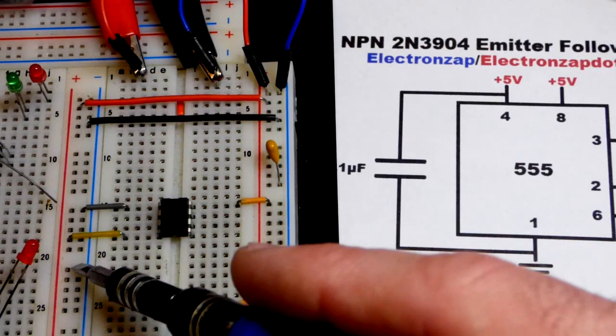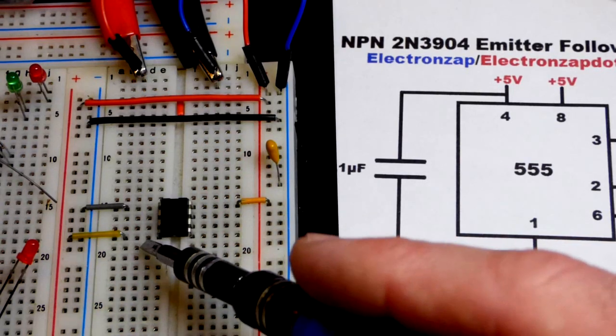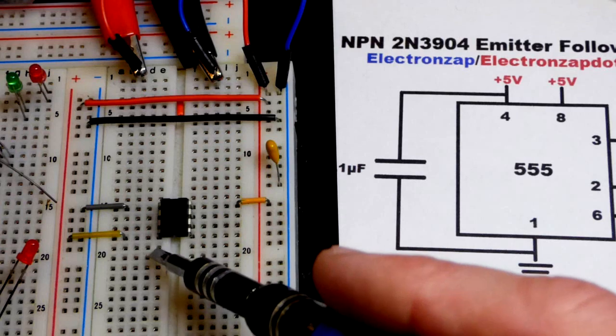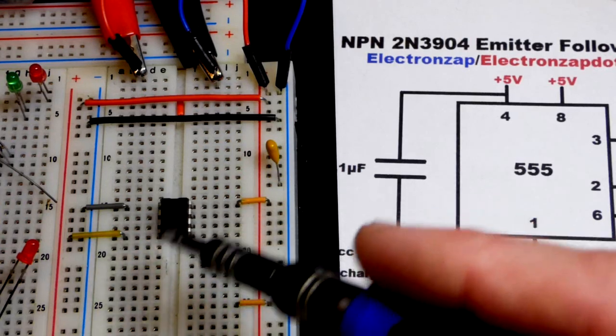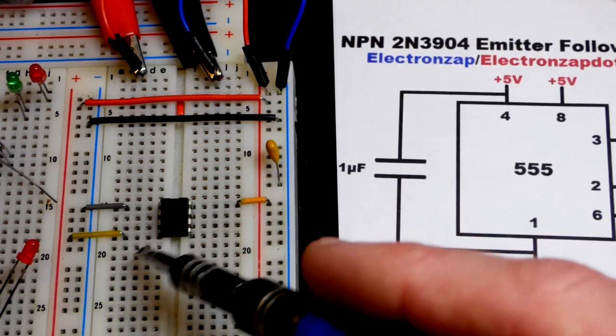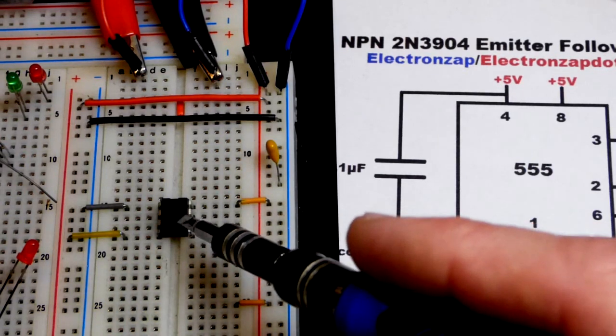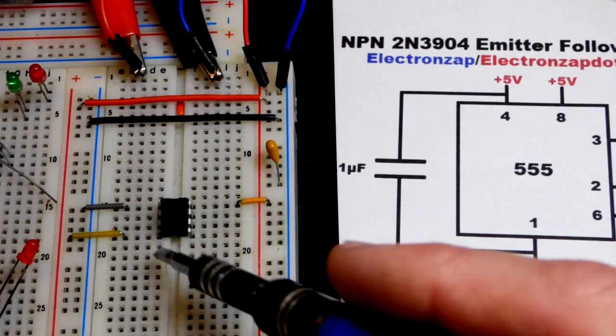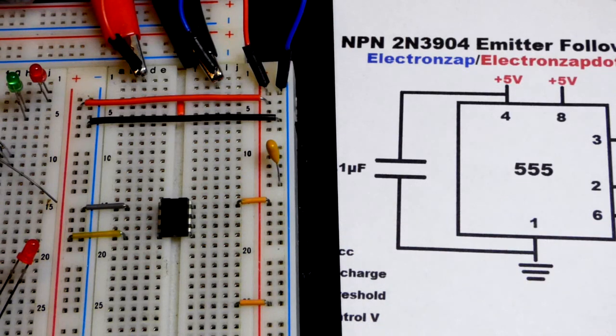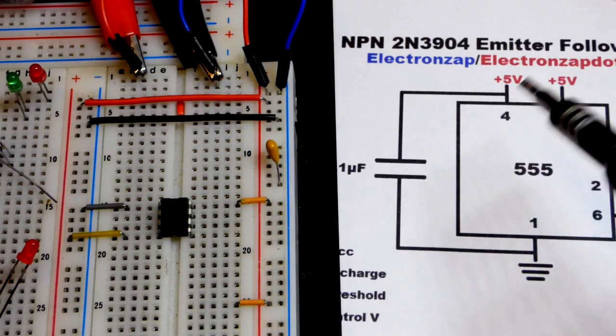This is a good thing to have there, that jumper to the positive rail. Pin number 4, the reset pin, is waiting for a low signal, so a voltage close to the negative rail. If it's just floating here, it can get stray signals.